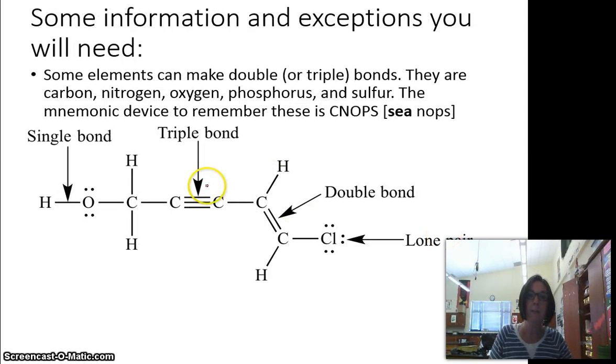The last thing you need to know is that there are some elements that can make double bonds or even sometimes triple bonds, but not all elements can do that. The only elements that can make double or triple bonds are carbon, nitrogen, oxygen, phosphorus, and sulfur. And so there's a mnemonic device to help you remember that. It's CNOPS, pronounce it C-nops. CNOPS are the only elements that can make double or triple bonds.